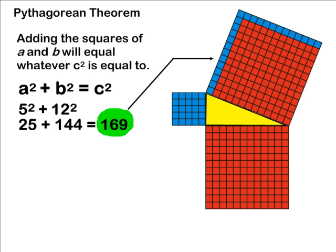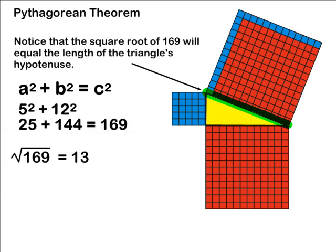And if we take the square root of 169 which is 13, you will notice that that is the length of one side of the square that we just produced, which is also the length of the hypotenuse of our right triangle.